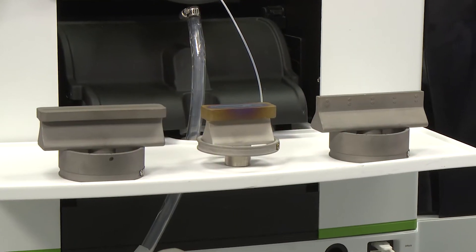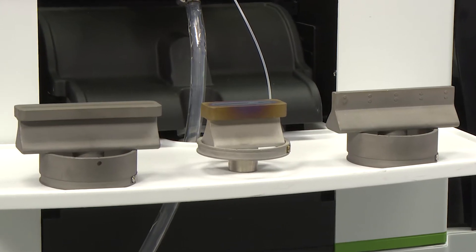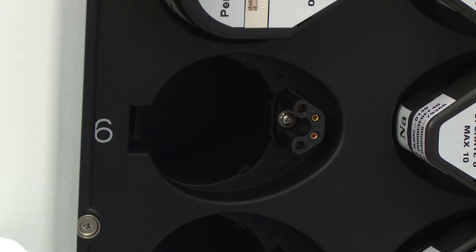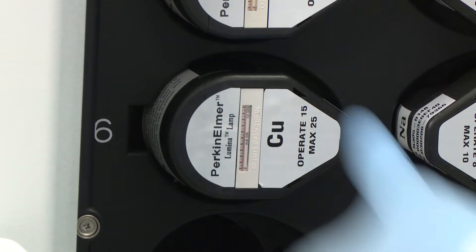First, make sure that the burner system is set up properly and the correct burner head for your intended analysis is installed. The next step in aligning the burner is to install and align the correct lamp for the element you have selected in the method.